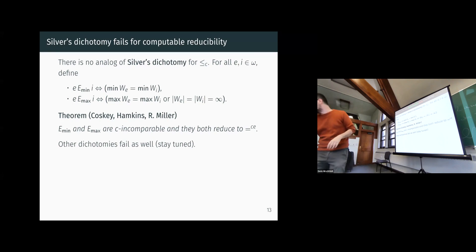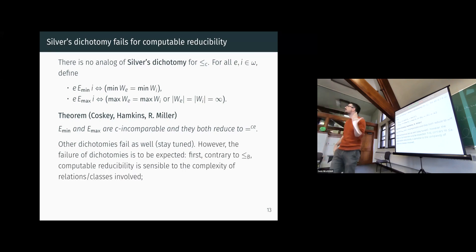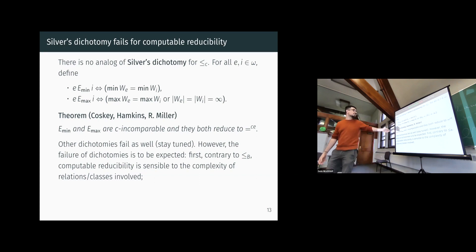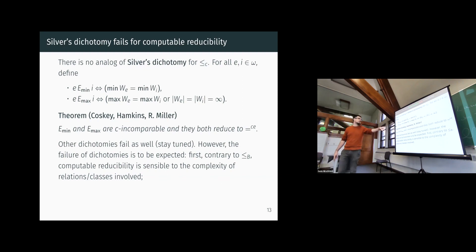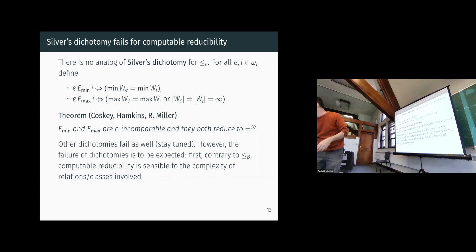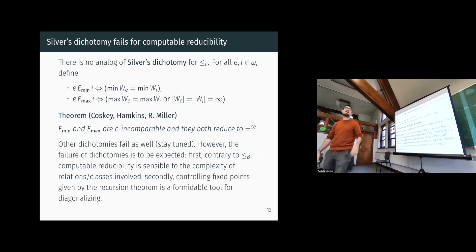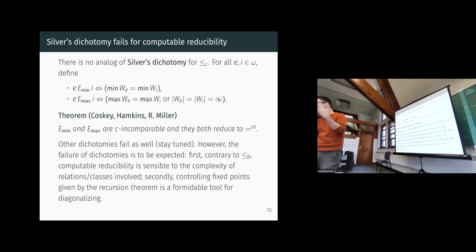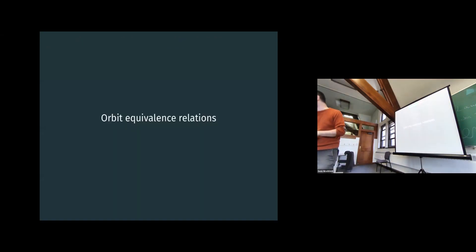A crucial difference between the Borel setting and the computable setting is that in the computable setting, reductions are sensitive to the complexity of the relations involved. A combination of these two facts produces a theory fairly different from the non-effective one. The failure of dichotomies is to be expected: contrary to the Borel case, the complexity of relations and classes matters here, so you can obtain plenty of no-reductions by controlling fixed points given by the recursion theorem.